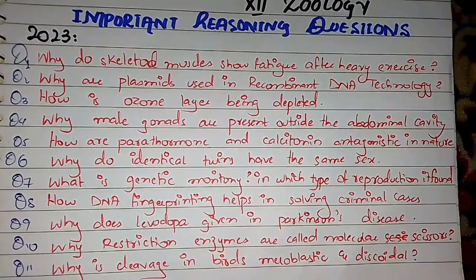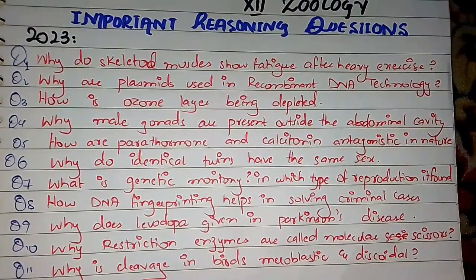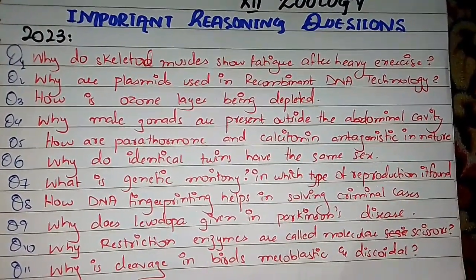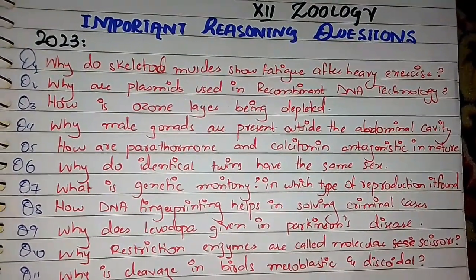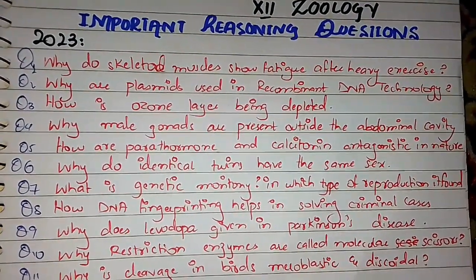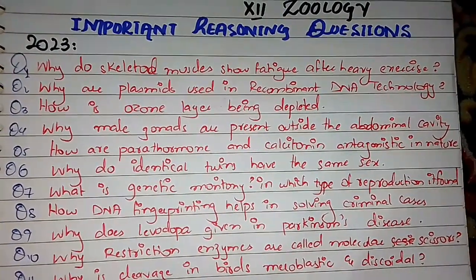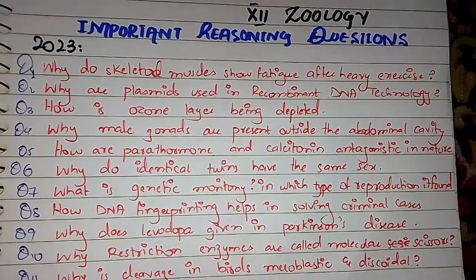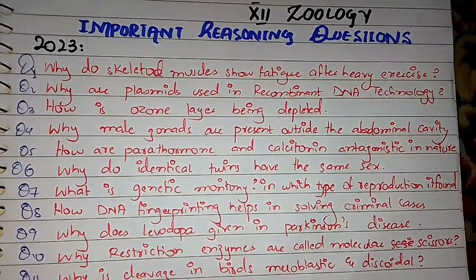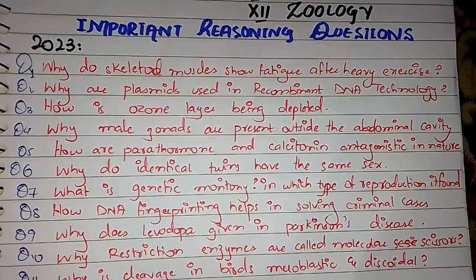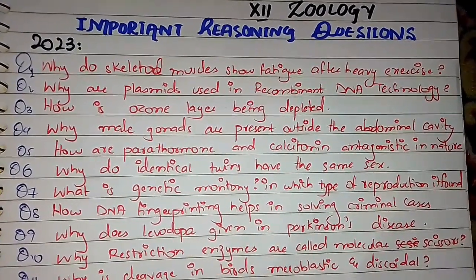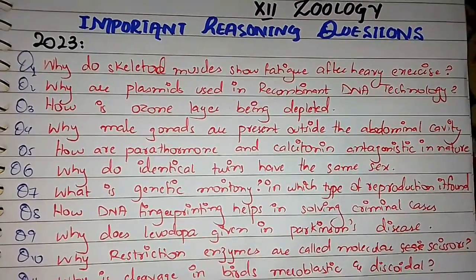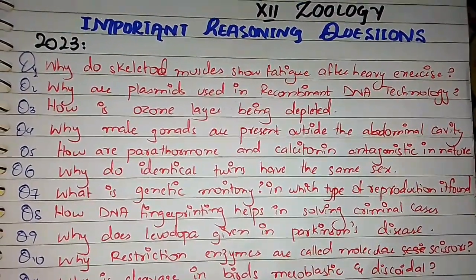Question number 3: How is the ozone layer being depleted? The ozone layer is a protective coat for life on earth; harmful radiation is filtered by this layer. It is depleted by CFCs - chlorofluorocarbons. These inert gases are released and one chlorine atom reacts with more than one lakh molecules of ozone.